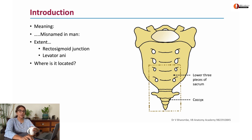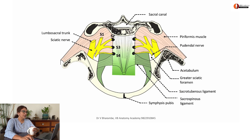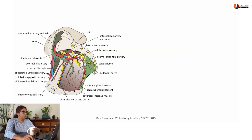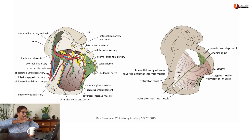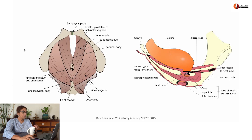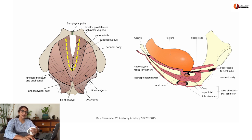Where is it located? It's located in front of the lower three pieces of sacrum and then the coccyx. Here you're seeing the sacrum and this is where your rectum is. Here is the obturator internus, part of the pelvis, with the levator ani attached to it. Here's your pelvic diaphragm and you can see how the rectum is passing through it, held in place by the two slings of puborectalis muscle.